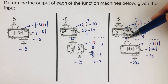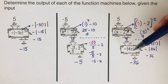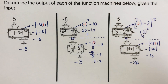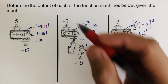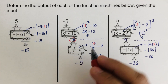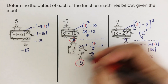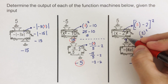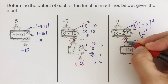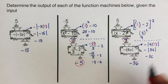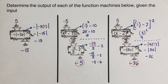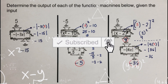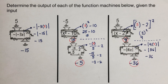So negative 5 was processed by the first machine giving output 9, which was then processed by the second machine giving final output negative 36. Both of the last two problems demonstrate two function machines stacked on top of each other — each one is a function because it produces only one unique output. Did you get the same answer? If you find this video helpful, hit like and subscribe for more math videos.